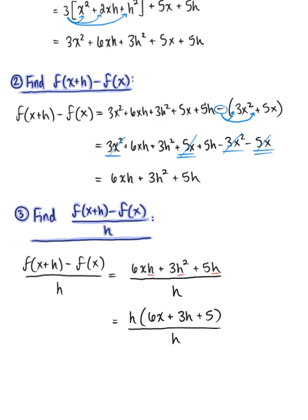We see now the h in the numerator cancels the h in the denominator, leaving us with a final answer of 6x plus 3h plus 5. This is our simplified difference quotient.